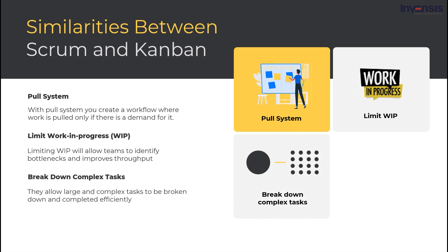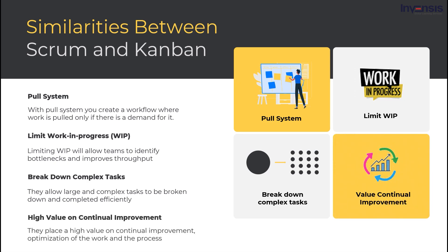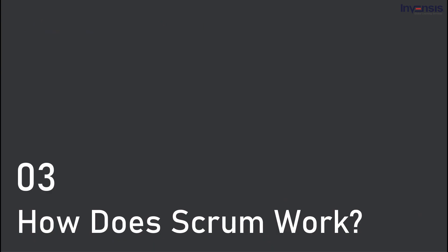They both allow for large and complex tasks to be broken down and completed efficiently, which puts them under the Agile umbrella. They place a high value on continual improvement, optimization of the work and the process. They make sure that all team members are in the loop on work-in-progress and what's to come. Before we begin discussing the differences between Scrum and Kanban, let's quickly go through the way Scrum and Kanban work.